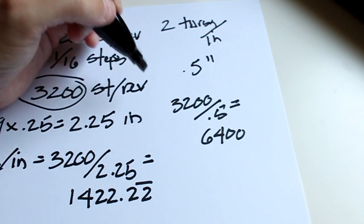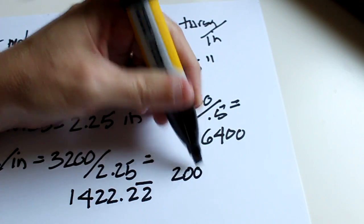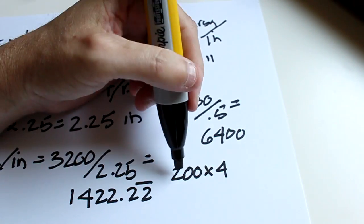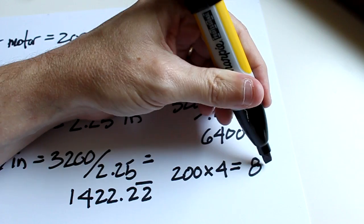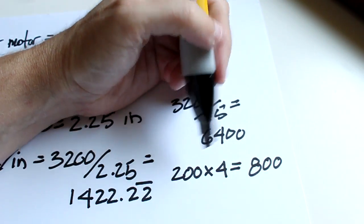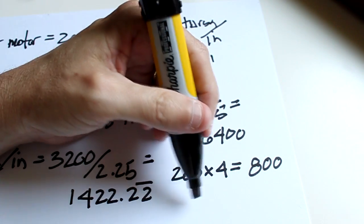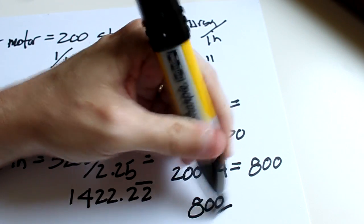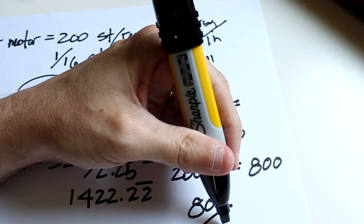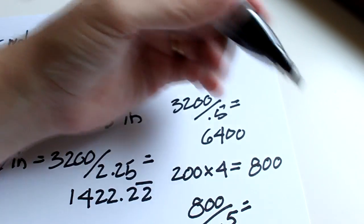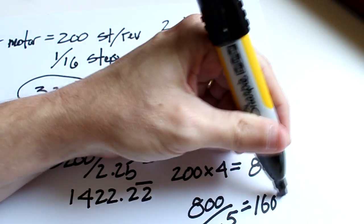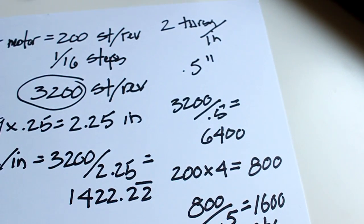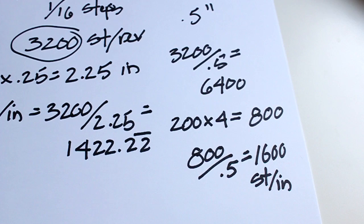So if it was at a quarter, 200 steps per revolution times 4 microsteps per step, that would be 800 steps per revolution. Now to get the steps per inch, we take the 800 and we divide it by the number of inches of travel which is 0.5 and we'll get 1600 steps per inch, which is what you'd be plugging into Mach 3.